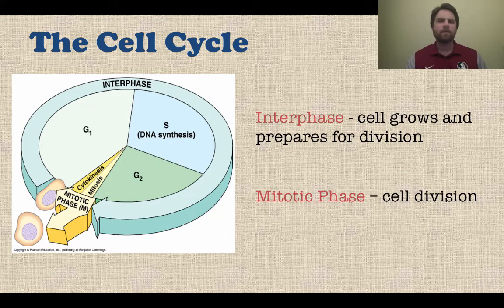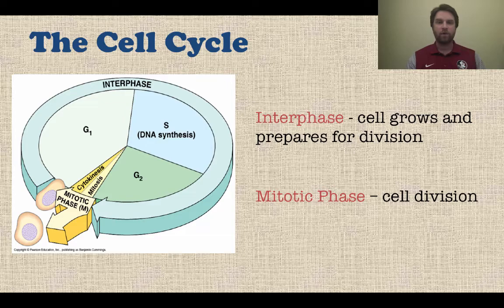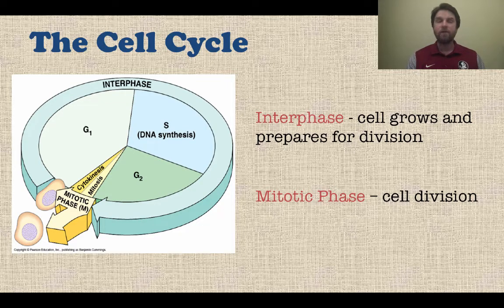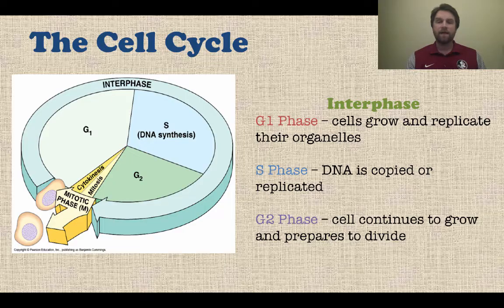So let's start talking about the cell cycle. There are two main parts of the cell cycle that you can see in the arrows going all the way around that circle. Interphase is the first one — it is really large and is made up of the G1, S, and G2 phase. And then you have the mitotic phase, or the M phase, which is that little tiny part right there in yellow. So let's talk about each one of those.